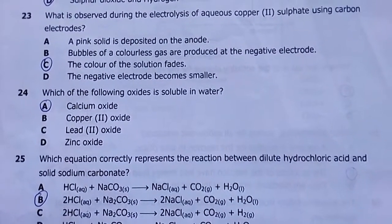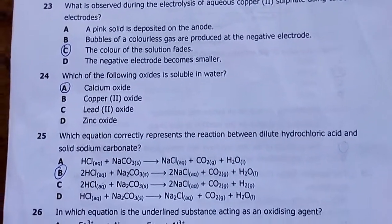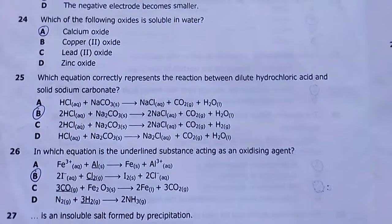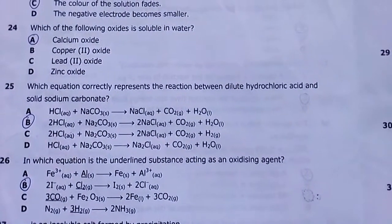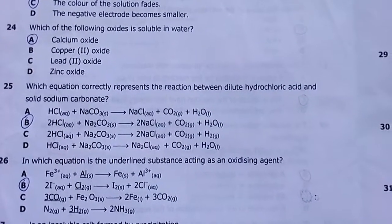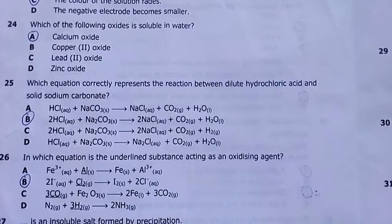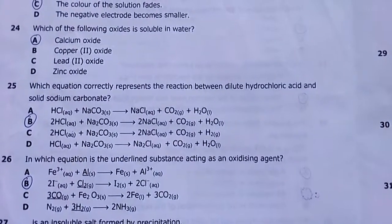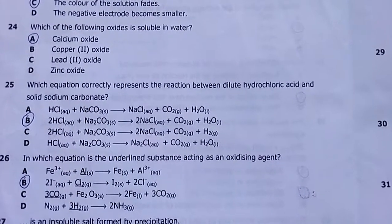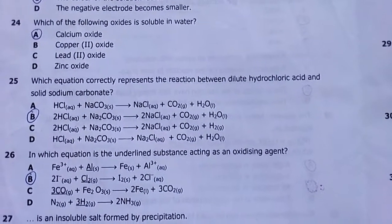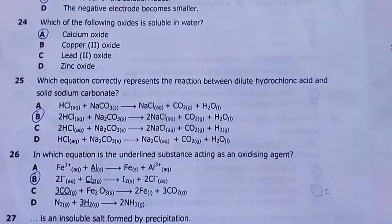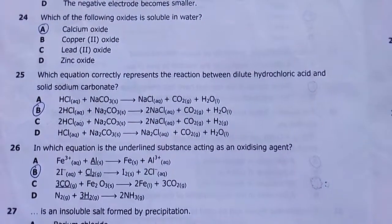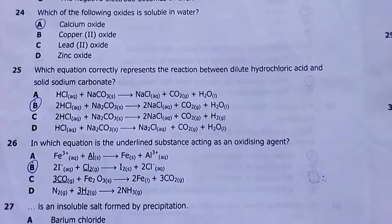Number twenty-four: which of the following oxides is soluble in water? Calcium oxide — it dissolves to give calcium hydroxide. Number twenty-five: which equation correctly represents the reaction between dilute hydrochloric acid and solid sodium carbonate? My answer is B. Pause the video to check why.